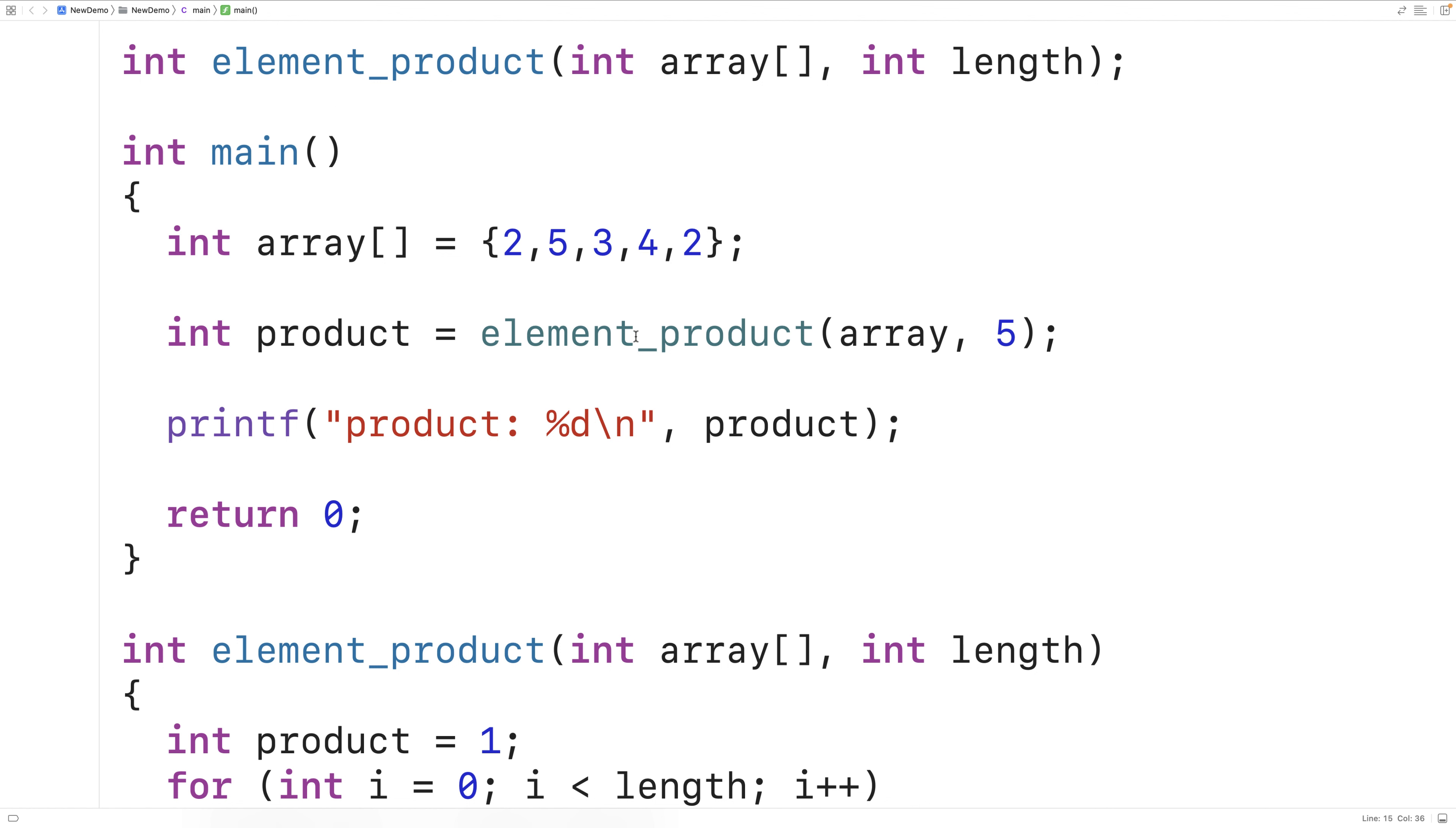Now we have two times five is ten, times three is thirty, times four is 120, times two is 240. So we expect the product to be 240.